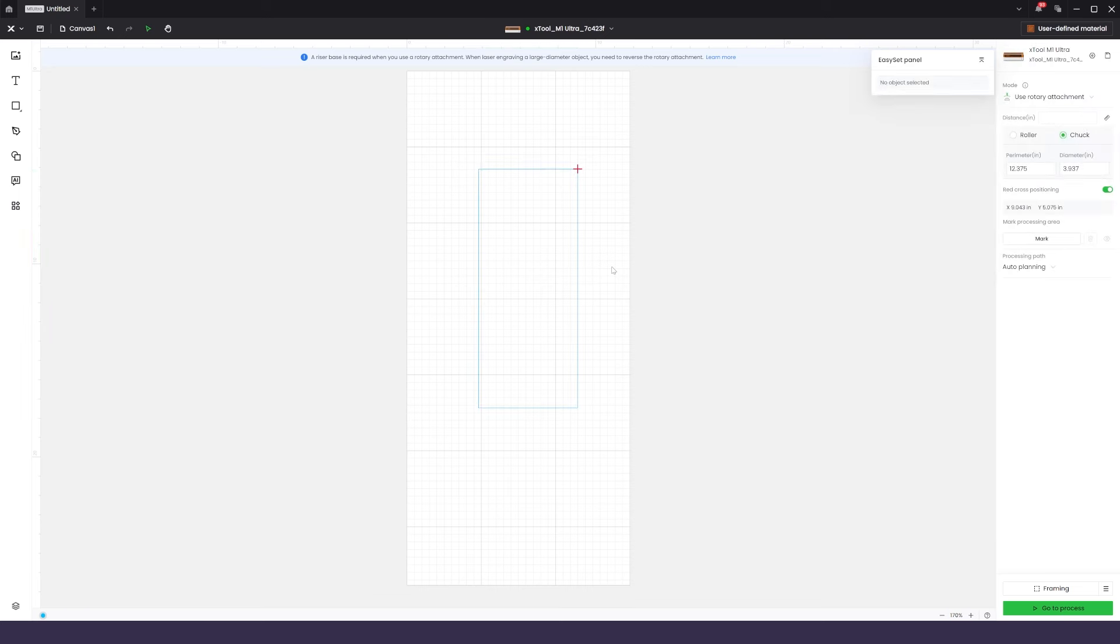If you want, you can also make it a different color. I typically put reference boundaries like this in a teal color so it's easier to separate from the engraving, which I normally set to black. Now that you can visualize the boundaries of the area you'll be engraving, drag and drop your design into the project.